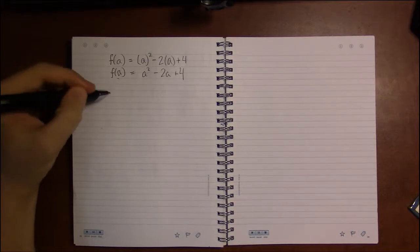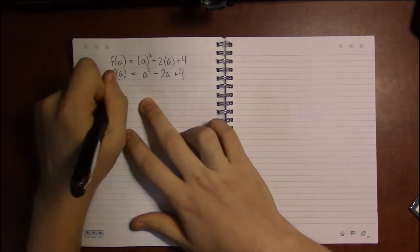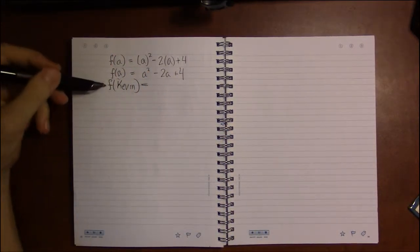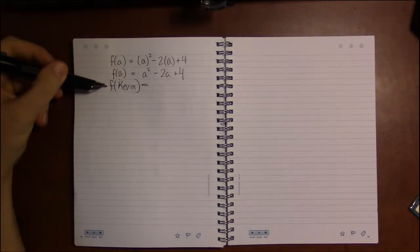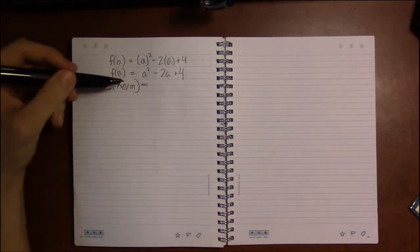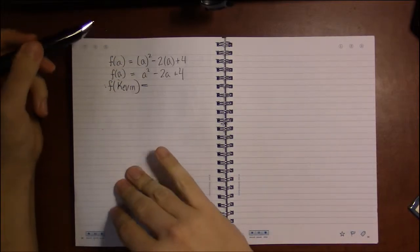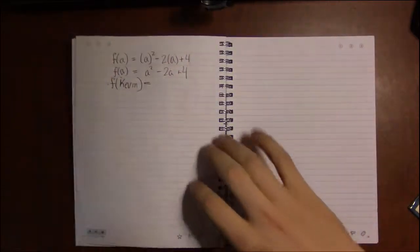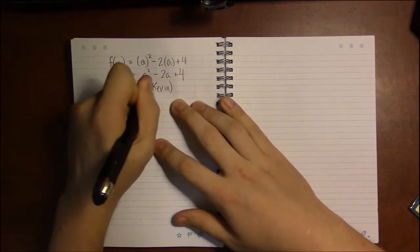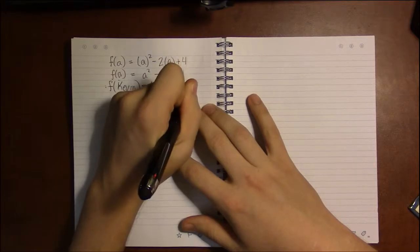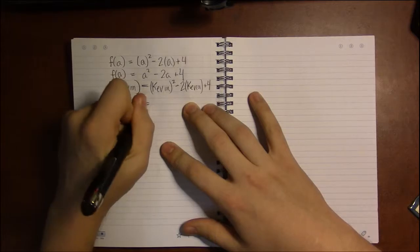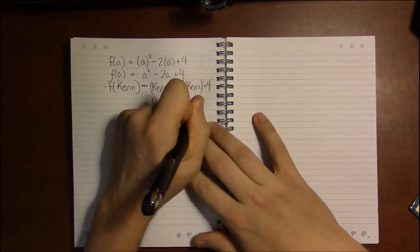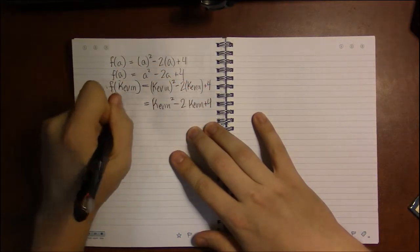Now, before I go to the example that always trips people up, let me do something absurd. f(Kevin). What is f(Kevin) going to be? Well, just following the rules, every time there was an x on the right hand side here, I'm going to replace it with Kevin. So it's going to be Kevin² - 2(Kevin) + 4. So this is just written a bit more simply without all those parentheses: Kevin² - 2Kevin + 4. That is f(Kevin).